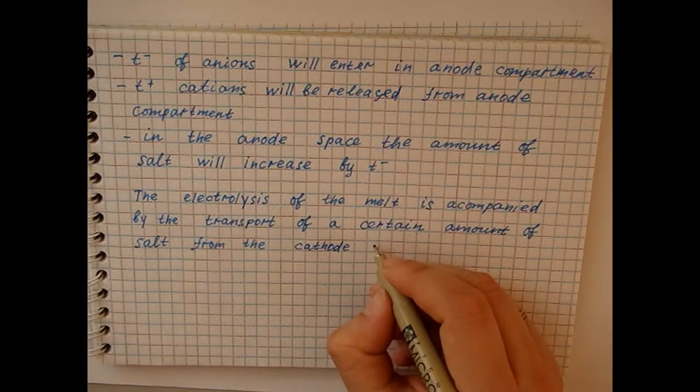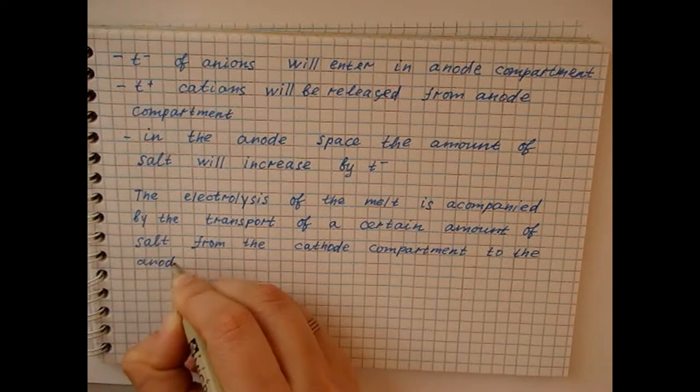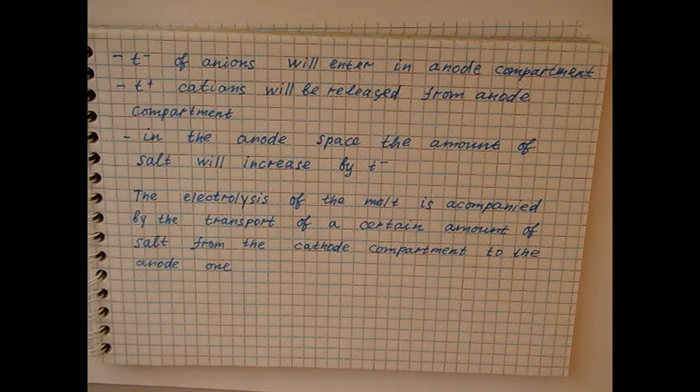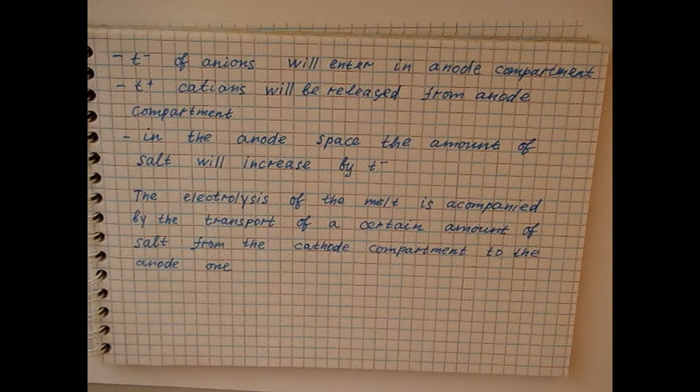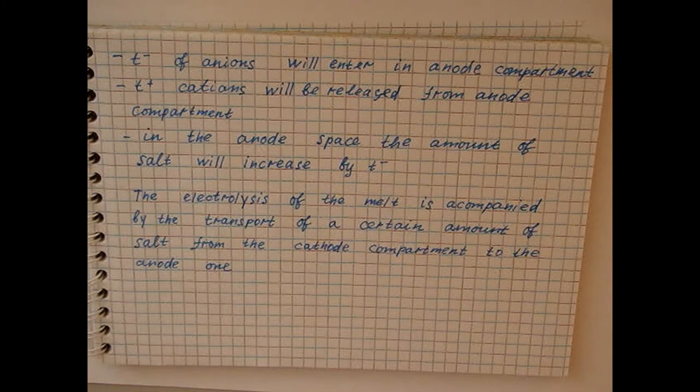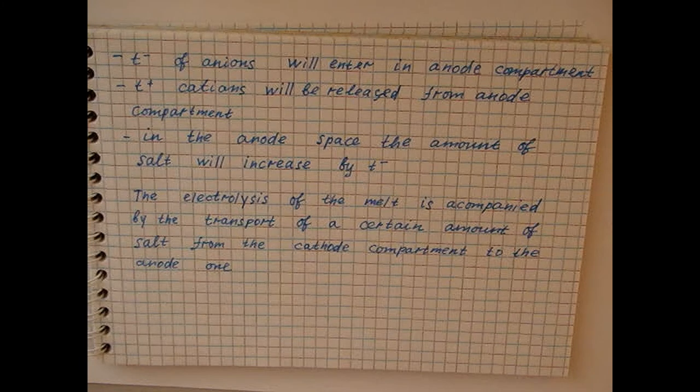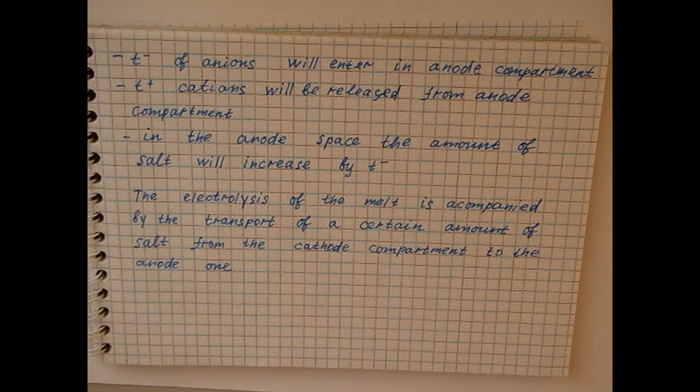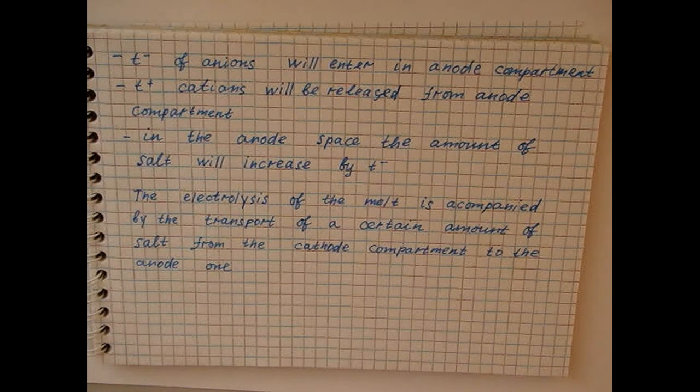It would seem that in this case the level of the melt in the anode compartment will increase, and the transport number can be calculated from this change. In fact, the difference in levels causes the liquid to flow from the anode to the cathode and equalizes the levels due to gravitational force. Therefore, it is impossible to determine the transport numbers in the melt this way.